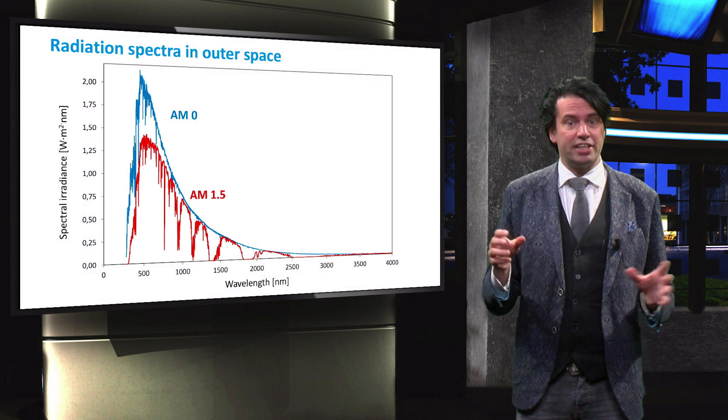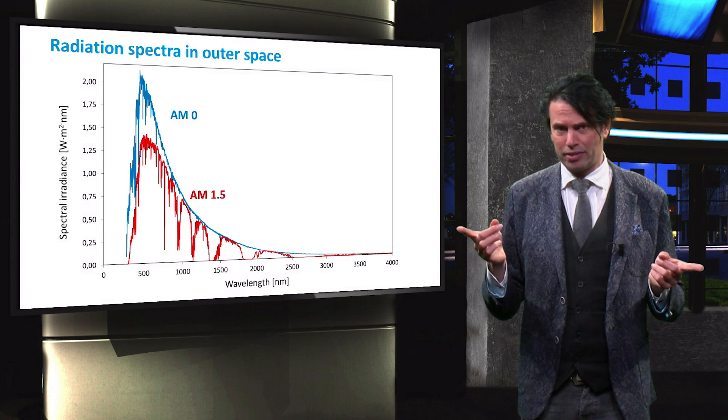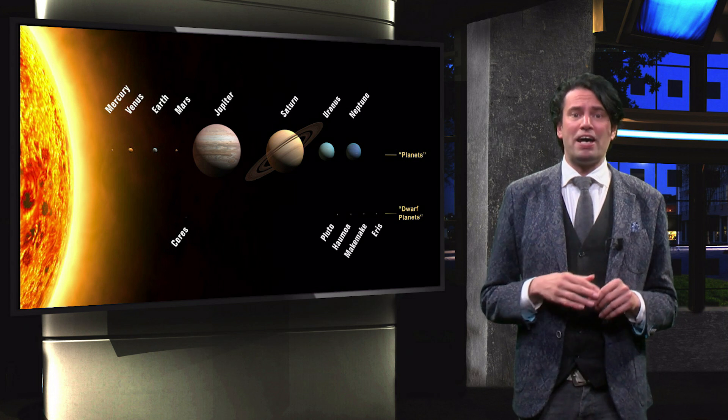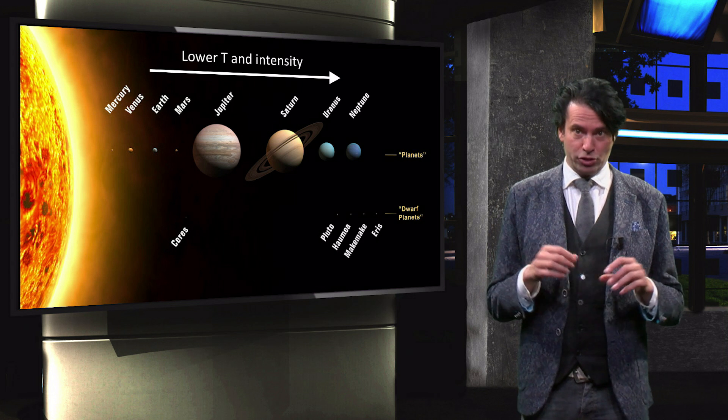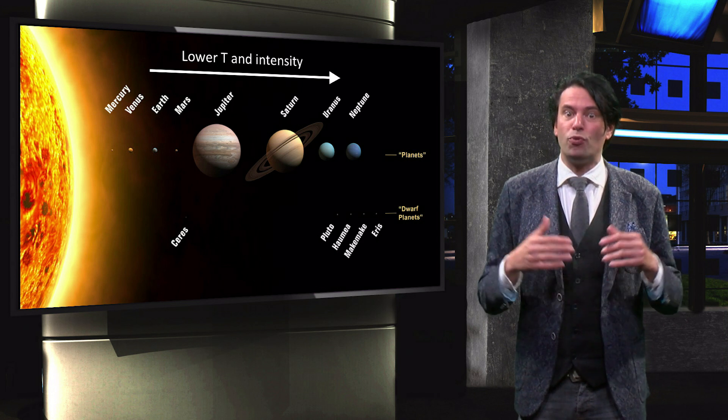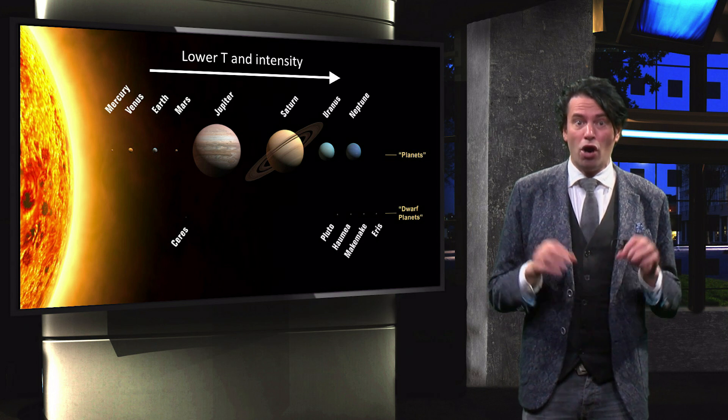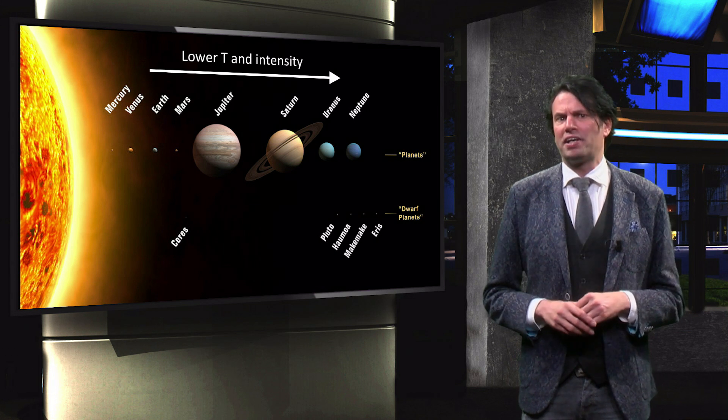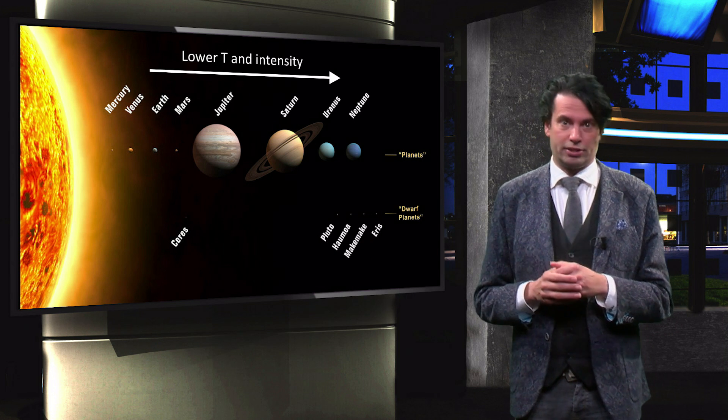For planetary space exploration, the design gets even more complicated. The available intensity and temperature will change significantly depending on the distance from the sun. For interplanetary missions close to the sun, the arrays must be capable of withstanding temperatures above 450 degrees Celsius while functioning at high solar intensities. For outer planetary missions, on the other hand, solar cells require operation at low intensities.